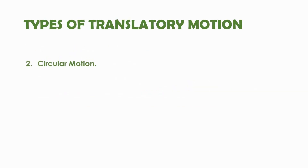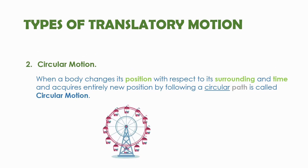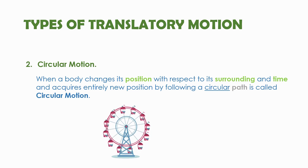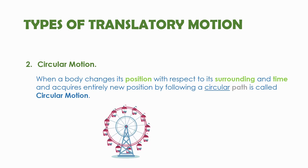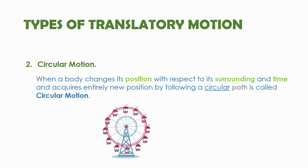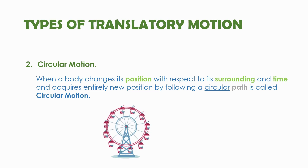The second type of translatory motion is circular motion, where the body changes its position and acquires an entirely new position by following a circular path. An example is the motion of a rider in a Ferris wheel. Remember that in circular motion, the body does not remain in contact with the center of the circle.